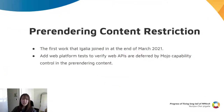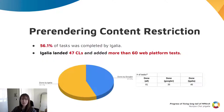Pre-rendering content restriction was the first work that EGALIA joined in. This work was to ensure that web APIs are deferred by Mojo capability control in the pre-rendering content by adding web platform tests. Pre-rendering content restriction had been completed, and about 56% of tests was completed by EGALIA.